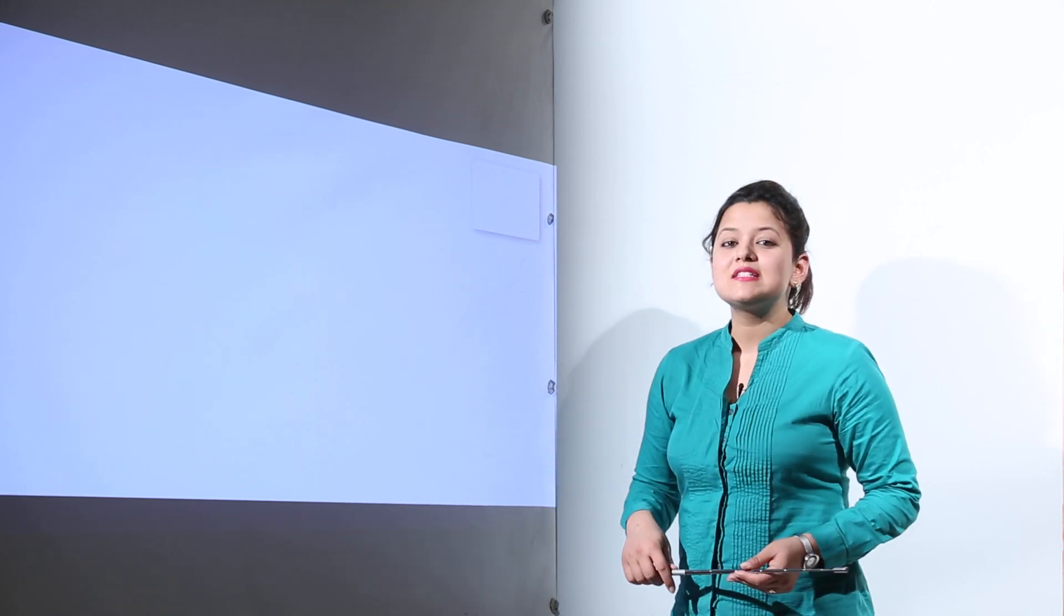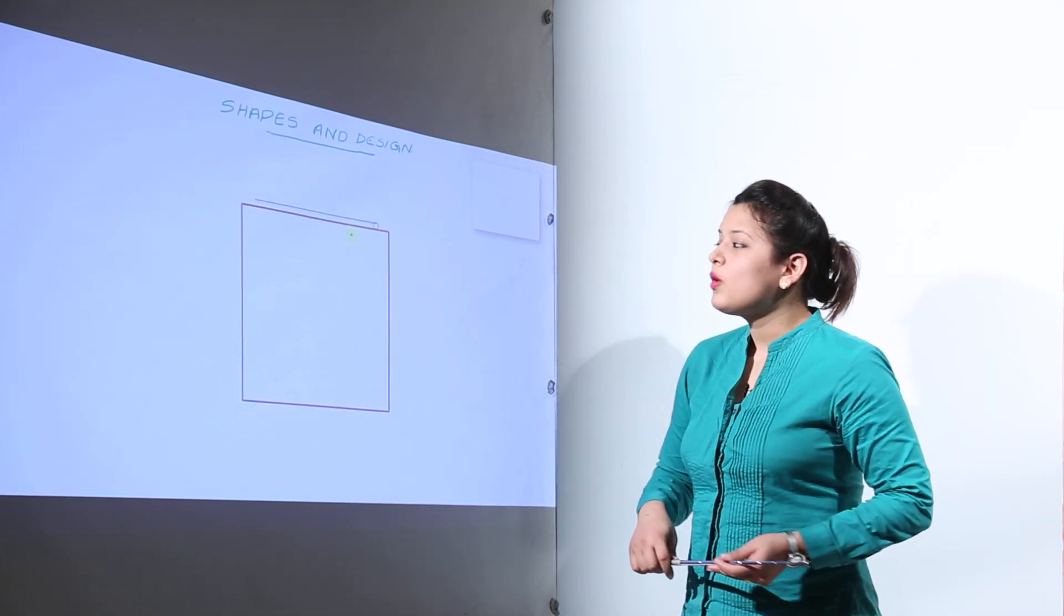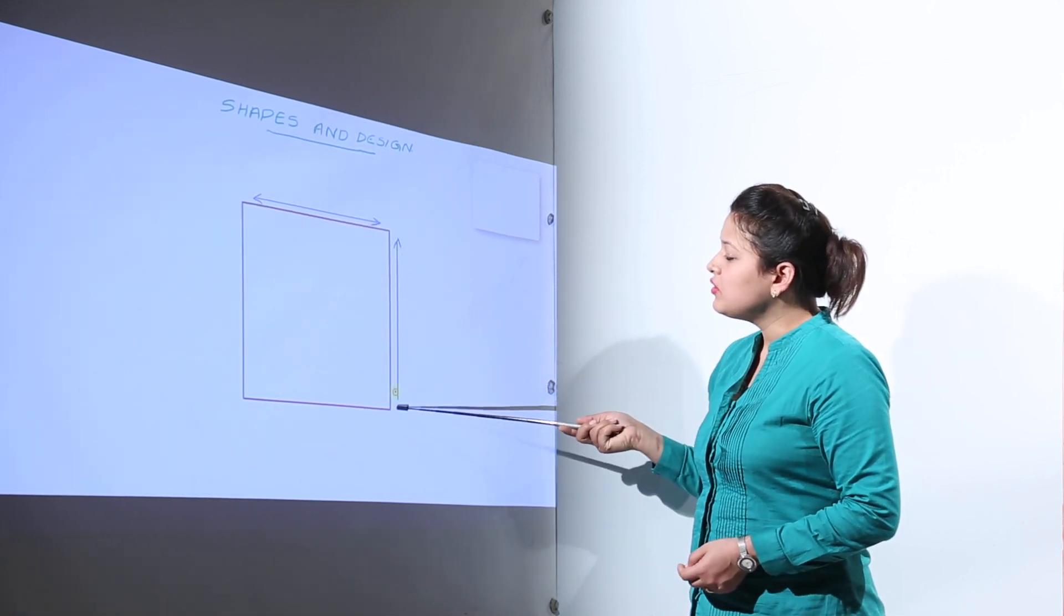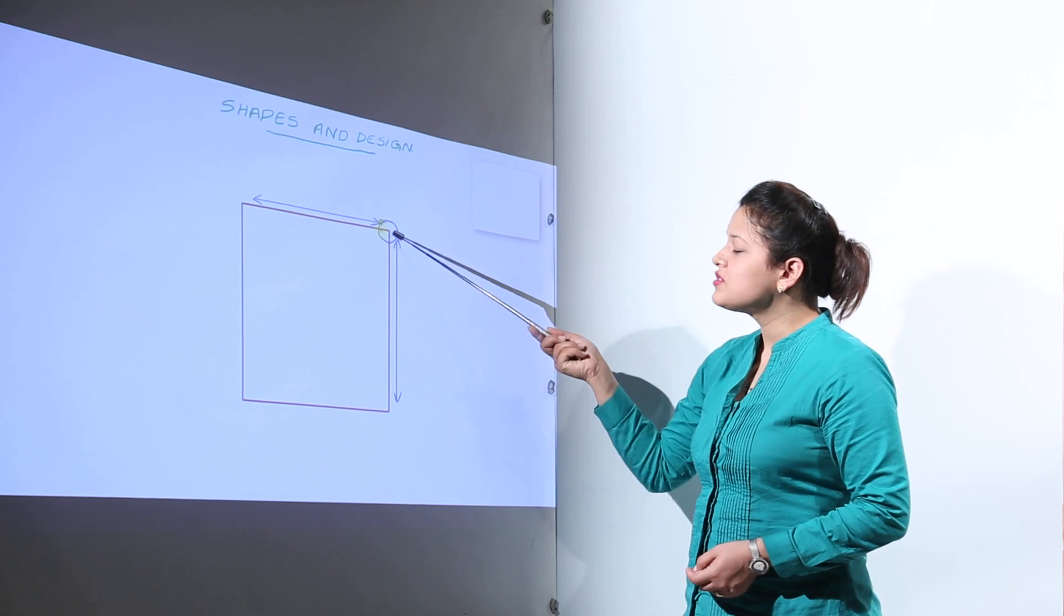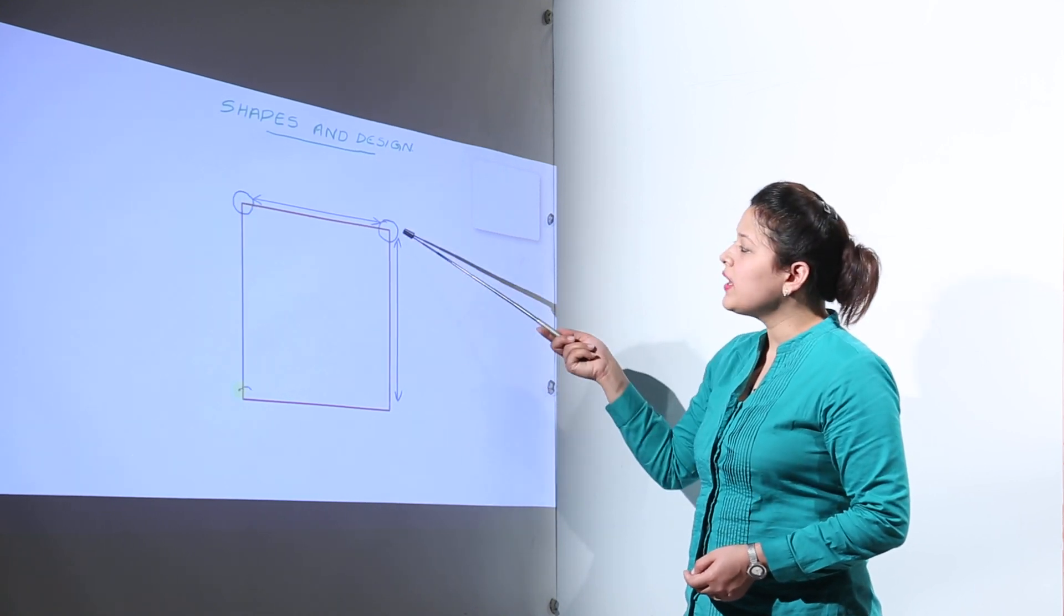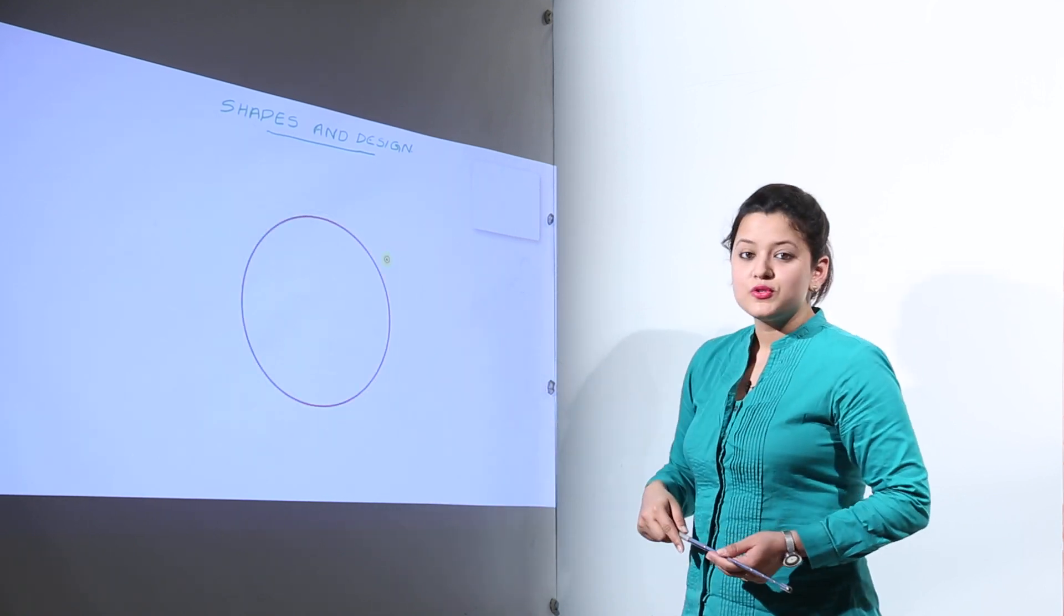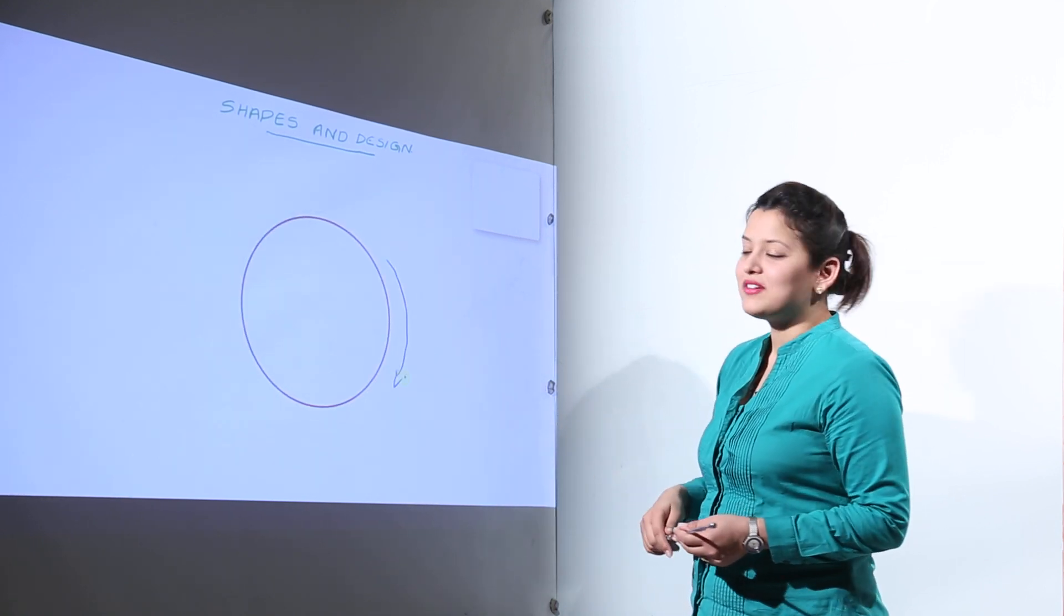So we are going to discuss the edges and corners. Now what are edges? Edges are the sides of any shape. Now you can see here we have straight edges and the point where edges meet is the corner. So you can see the corners also. So we have the edges and corners.